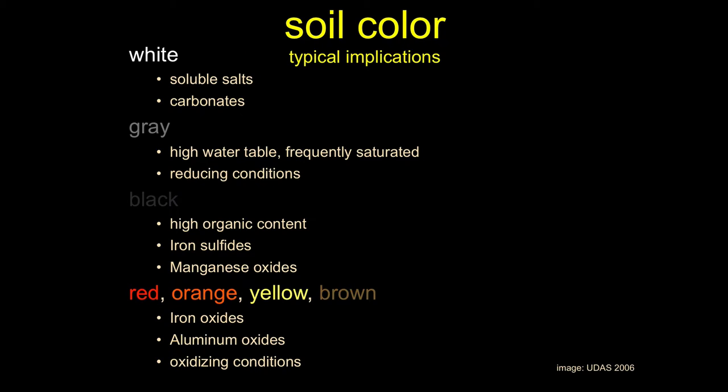Key things to remember: darkness is generally correlated with organic material, and rustiness — orange and yellow tones — corresponds to an oxidizing environment for metals, especially iron. Lots of white tones tend to be salts and carbonates. Gray tends to indicate a high water table and frequently saturated, reducing conditions. Black tends to be highly organic soils — iron sulfides and manganese oxides. Oranges and yellows come from the rusting of metals, especially iron.